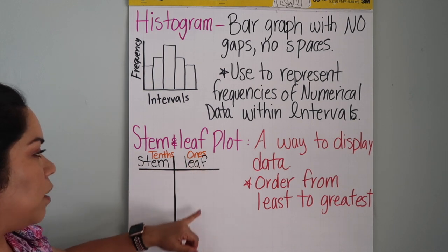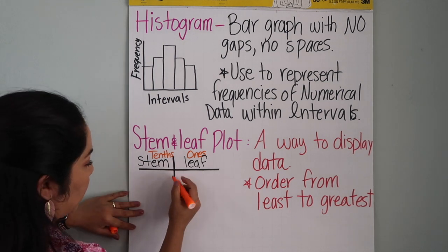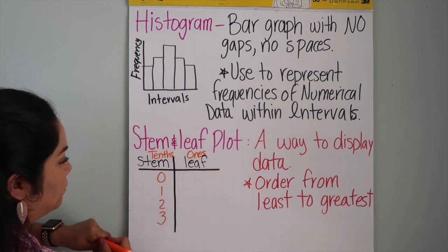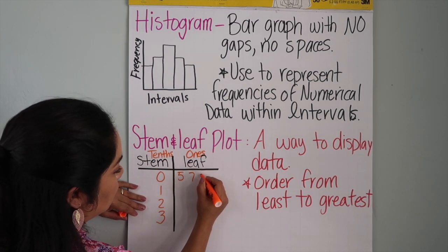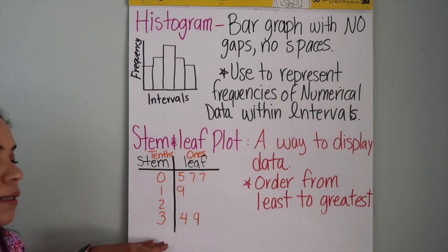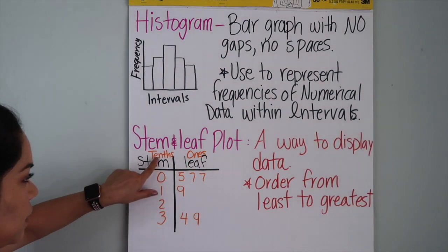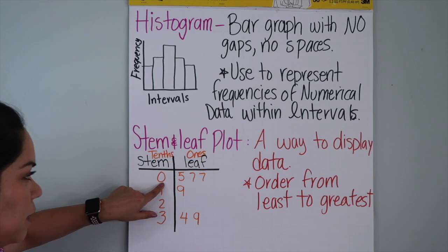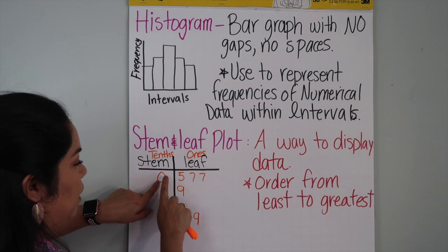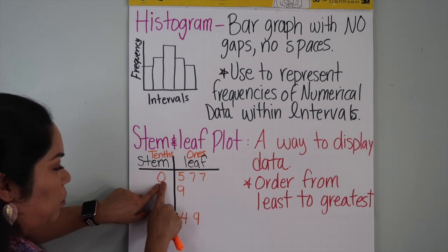Your stem and leaf - tens place, ones place. So I'm just going to give you an example: zero, one, two, three, and then five, seven, nine. The way you read it, since this is the tens place and these are the ones place, your number will be five, seven, and seven, since the zero is the tens place.